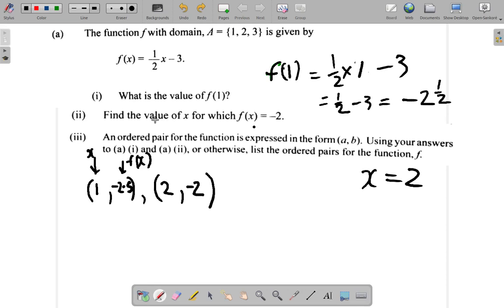You're given f of x to find x so you went the opposite direction but you still got your answer. So the ordered pair from part 1 is 1, negative 2 and a half. The ordered pair for part 2 is 2, negative 2.